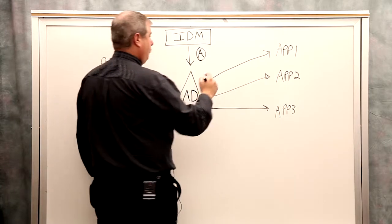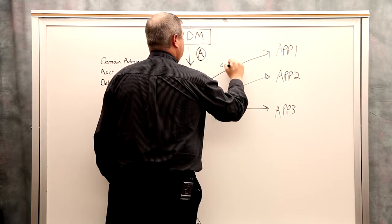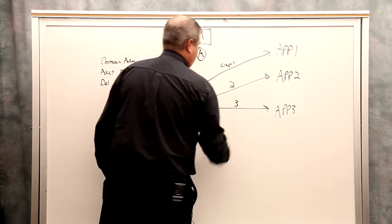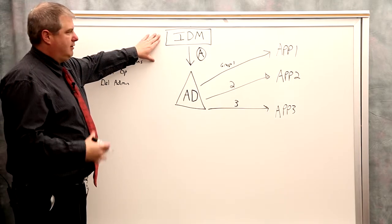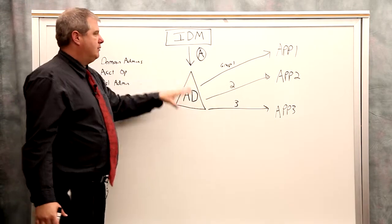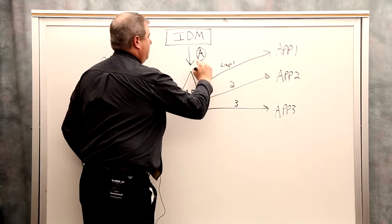Active Directory is pretty much everything group related. So let's just say hypothetically, this is group number one, group two, and group three. And IDM is doing a great job. It's set up to automatically add you to groups based upon a role. So there's typically some kind of role engine here or some kind of policy engine.